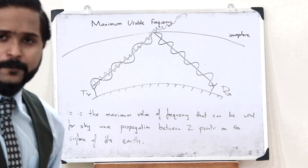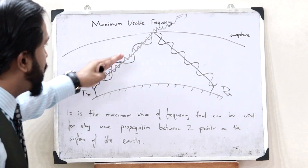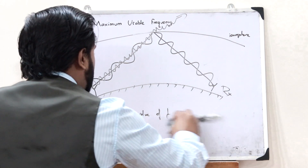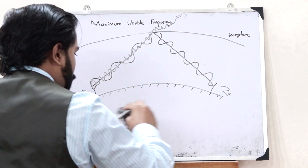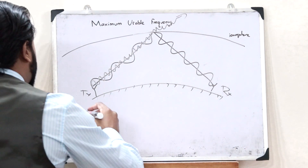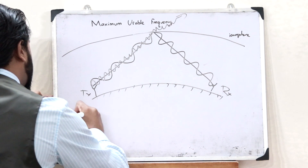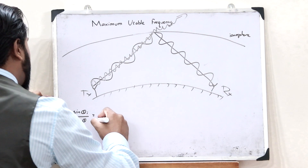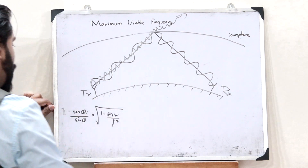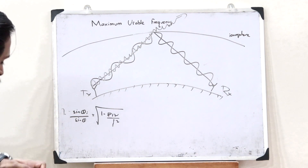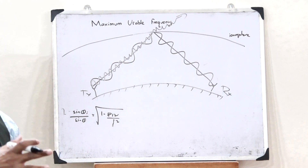What is the mathematical expression for this maximum usable frequency? How can we mathematically obtain the maximum usable frequency when we send a signal at a particular angle? For that, we use the expression for the refractive index of the ionosphere: eta equals sin(θi) divided by sin(θ), which equals the square root of 1 minus 81n divided by f squared. Here the value of θ can vary from 0 to 90 degrees.